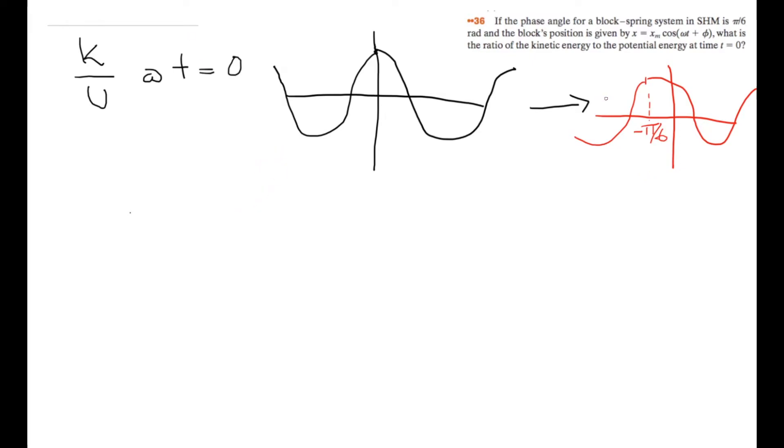We can use the given formula, substitute in our phase angle π/6 and time t equals 0 to solve for the ratio of the new position. So we have x equals xm times the cosine of ω times 0 plus π/6. So the position x is equal to √3/2 of the amplitude.